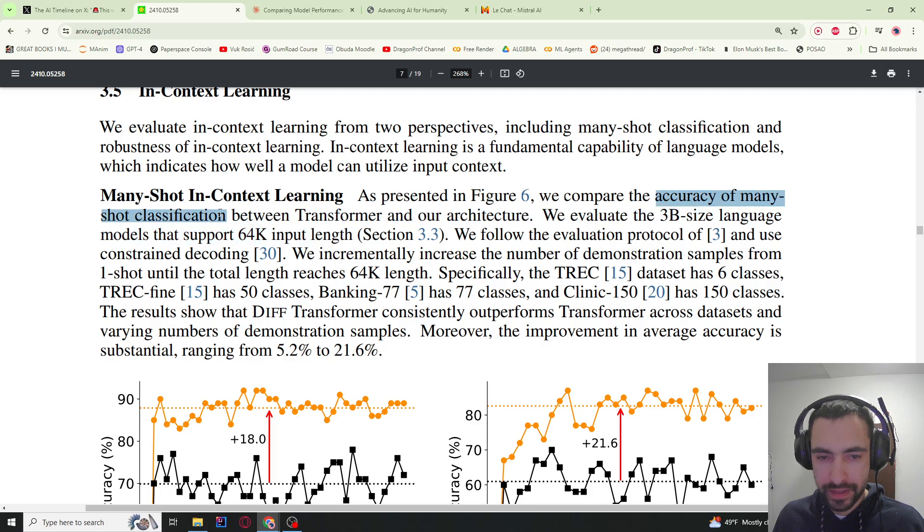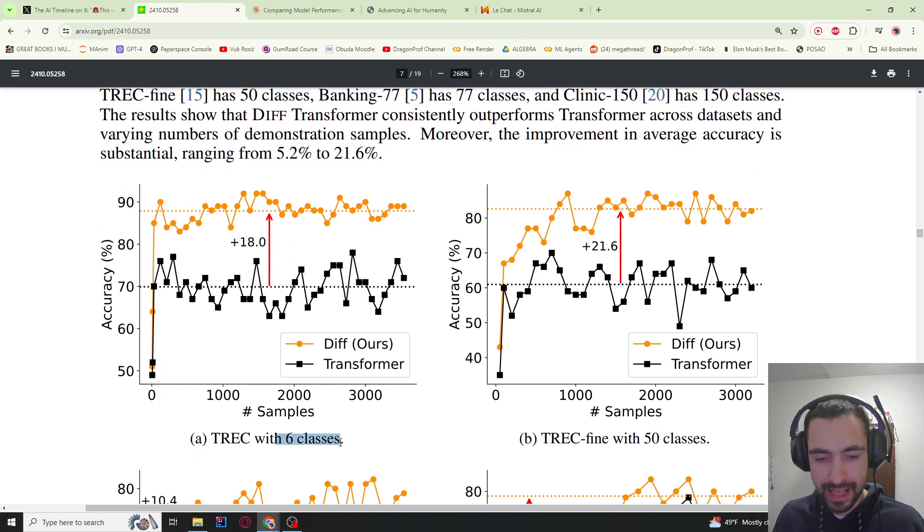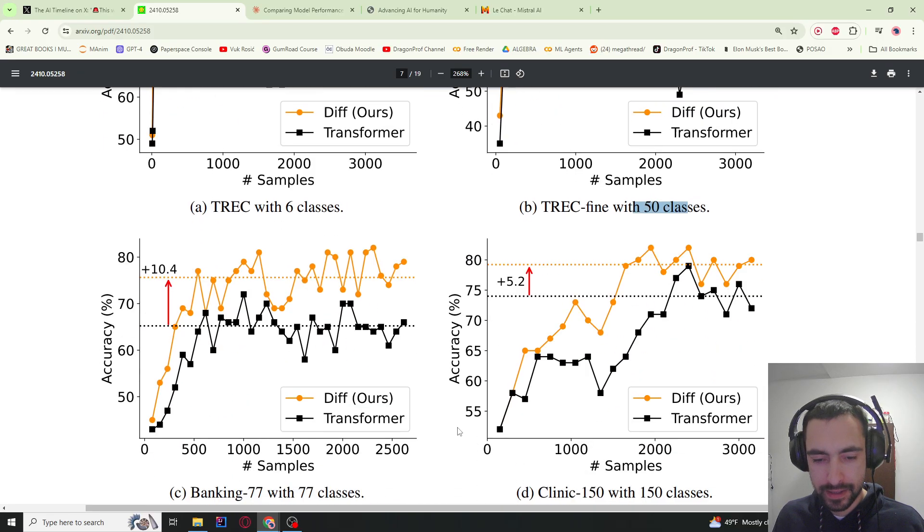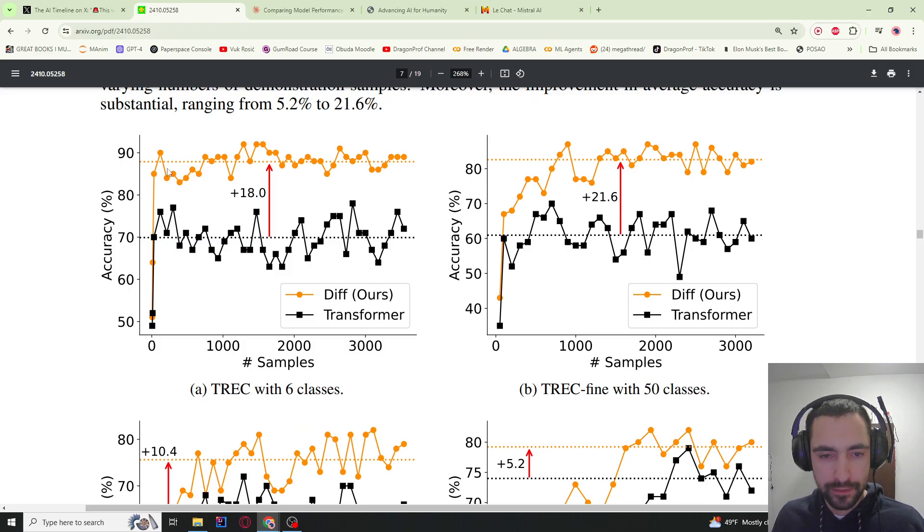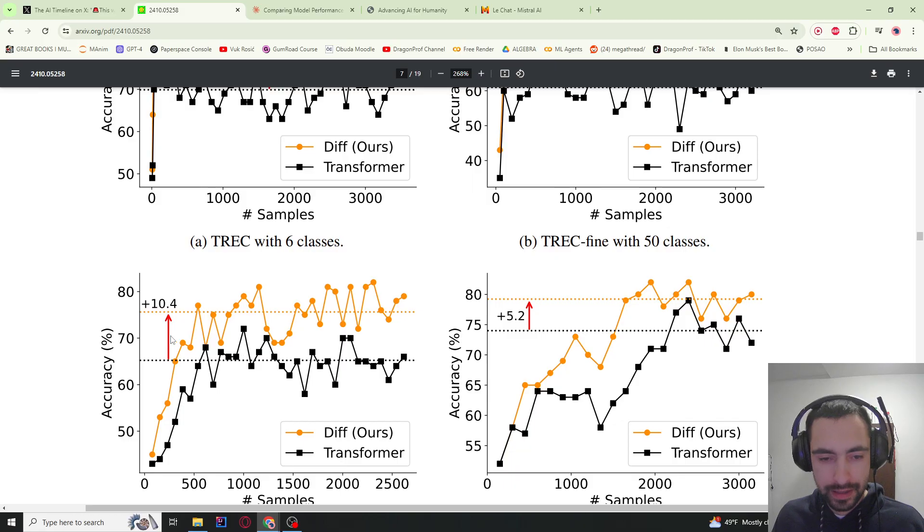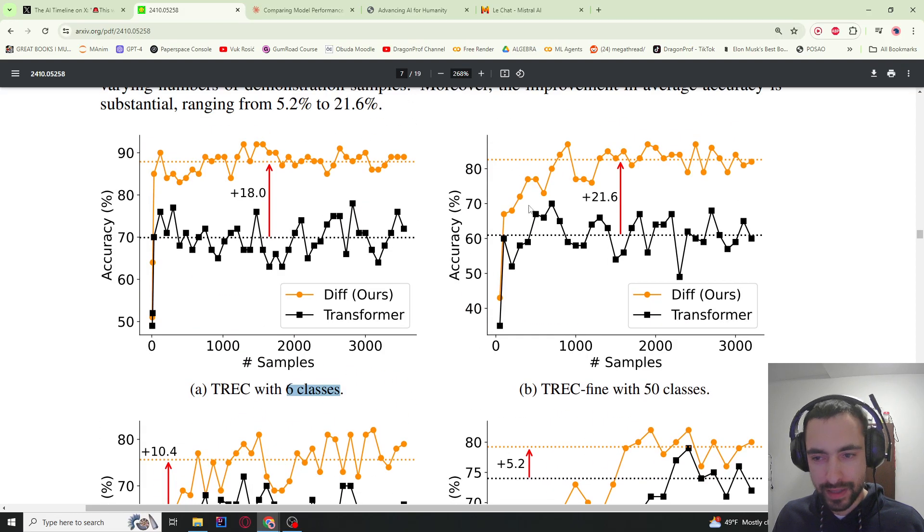Then we have many-shot classifications. They give it a bunch of examples and tell it to classify the data into groups, into classes. Here we have 6 classes, 50 classes, 77 classes, 150 classes. The diff transformer outperforms here—gets around 88% accuracy. Here the classic gets 70%, so this is 21% improvement. This improvement is 10.4% and 5%. It looks like where there are less classes, the improvement is bigger.